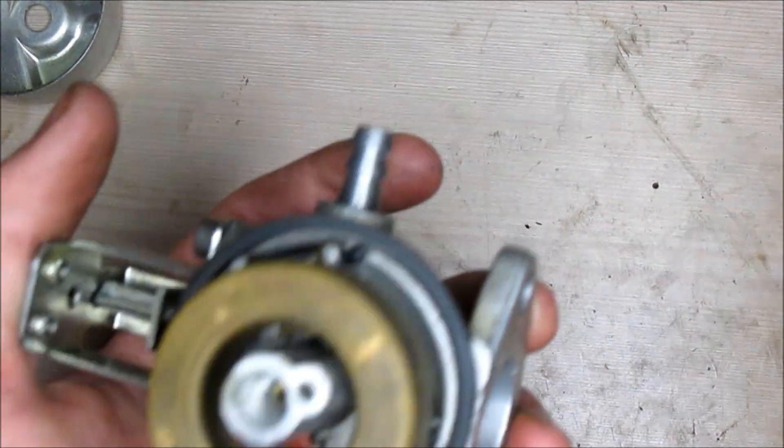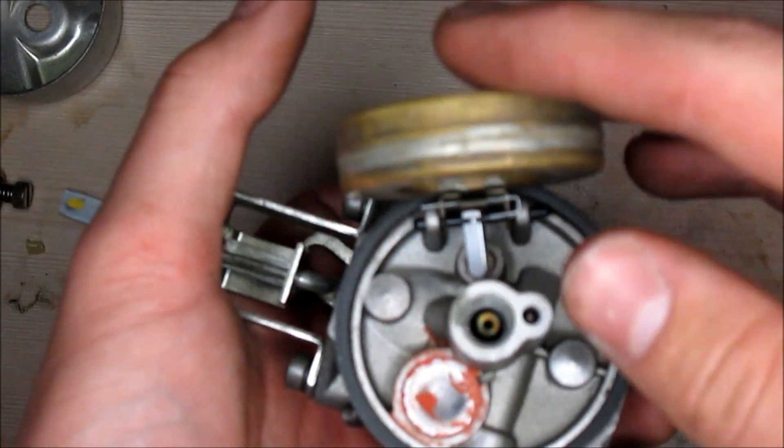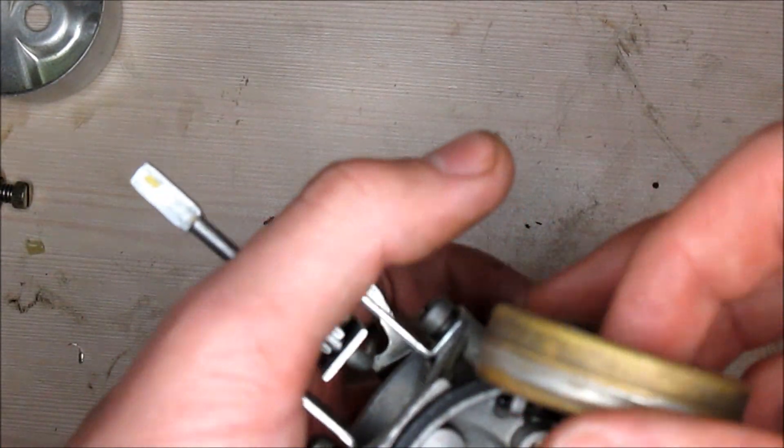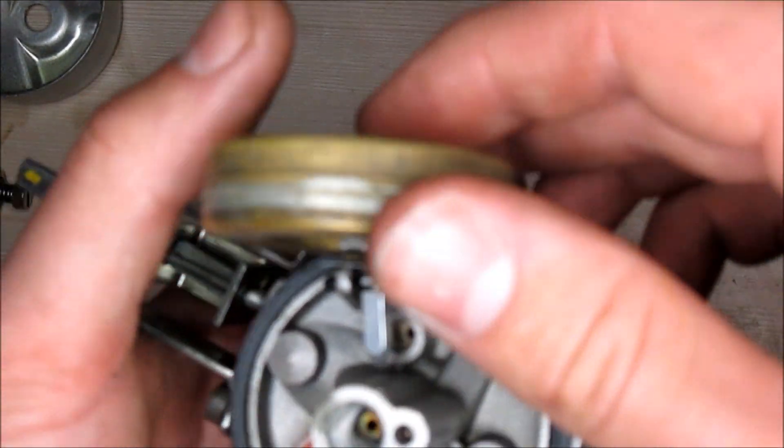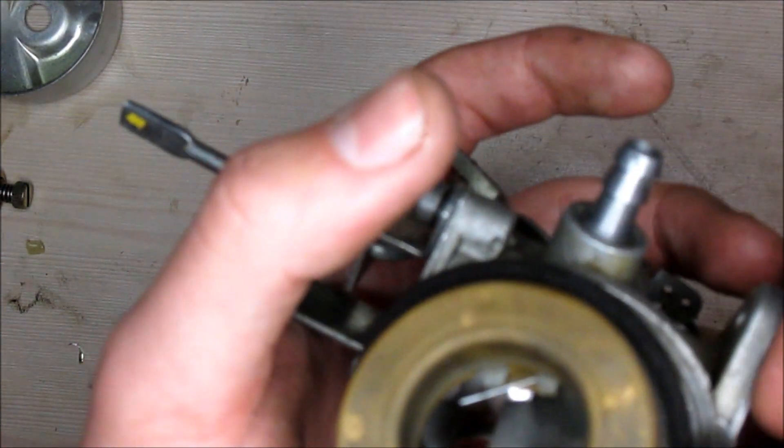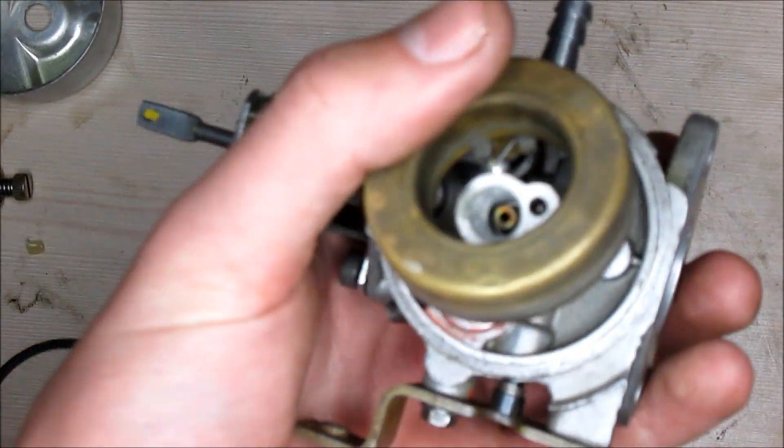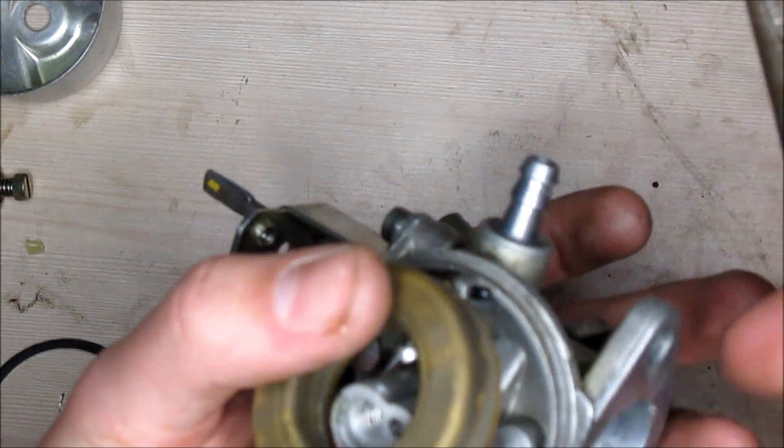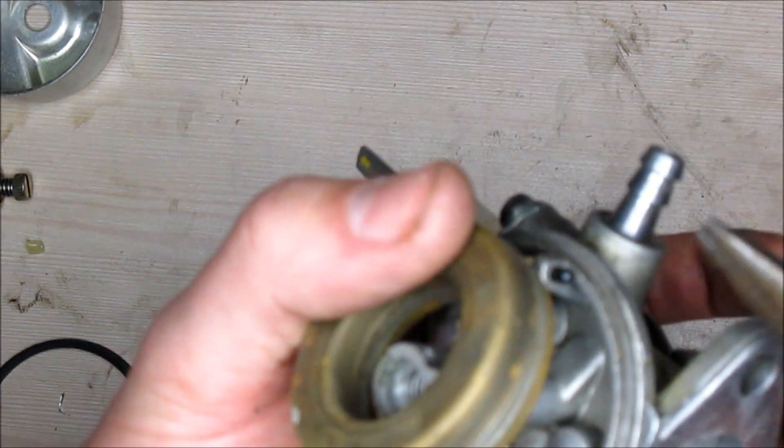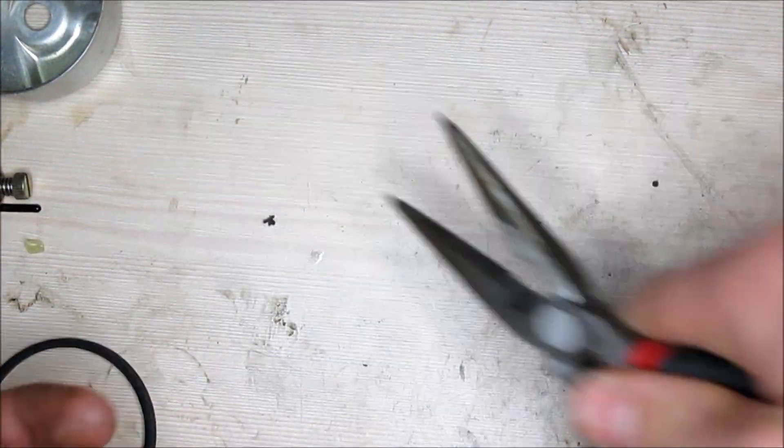To further disassemble the carburetor, the first thing we want to do is remove this connecting rod. If the parts are just falling off, you might as well just take them off, like the O-ring gasket. The next thing you want to do is remove the connecting rod that connects the float itself to the carburetor by just pulling it out. Just like that.